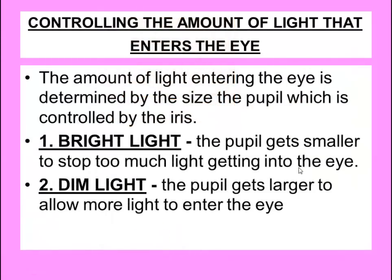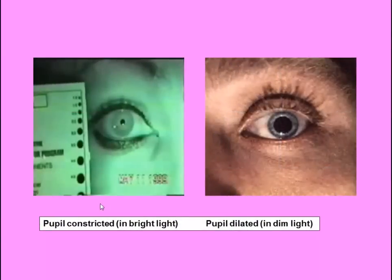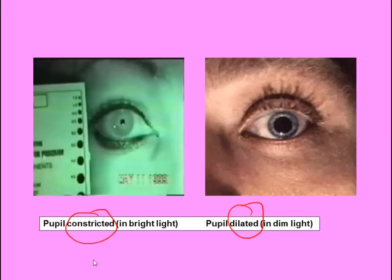Bright light is very damaging for the eye, and to counteract it, in bright light the pupil becomes smaller, preventing too much light from getting in. In dim light, we need to let more light into the eye, so the pupil gets larger to allow more light to enter. In a picture of this: in bright light the pupil is very, very small, whereas in dim light the pupil is much, much larger. We call this larger pupil a dilated pupil, and the smaller pupil a constricted pupil.